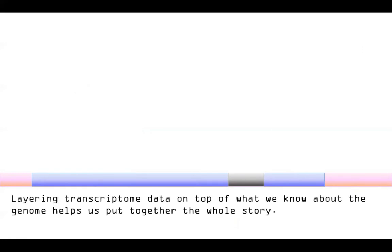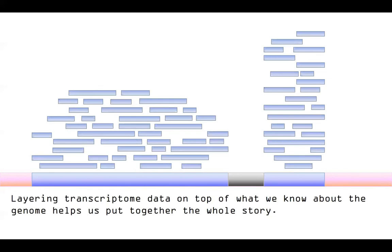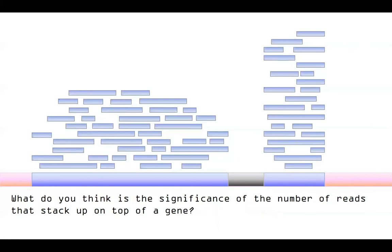Welcome back. We're now going to layer that transcriptome data on top of what we know about the genome to help us put together the whole story. We've layered all of our reads on top, and you can see how they assemble together to cover the area of an annotated exon, skipping an annotated intron, so we can start to put together that this is maybe one whole gene, with an intron in the middle. The significance of the number of reads stacking up is that we're going to be counting these so that we know how many copies of RNA were originally expressed in that sample.